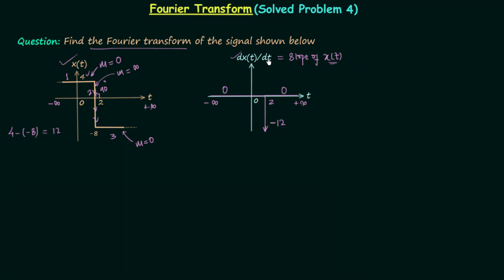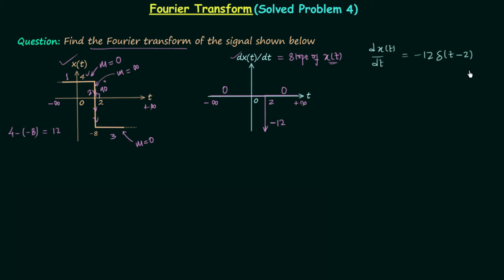Now we can write DXT over DT in terms of this impulse, and after that we will calculate the Fourier transform. So DXT over DT is equal to minus 12 — the strength of the impulse — and the impulse is present at T equal to 2. This means there should be a right shifting of delta(T), so we have delta(T minus 2). In this way we have represented DXT over DT in terms of an impulse, and now we will take the Fourier transform on both sides.